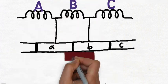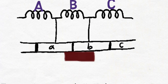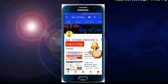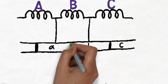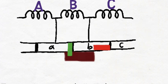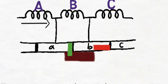In the second case, when the commutator segment moves and the brush changes its position toward segment A, segment A also comes into contact with the brush and the contact area of the brush with segment B is somewhat reduced. Now the brush collects current from two segments — A and B. However, the contact area of segment B is more than segment A, hence the current collected from segment B is more than from segment A.